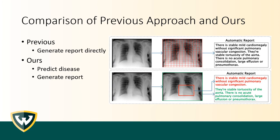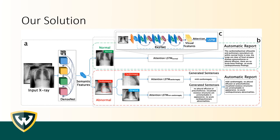Many existing methods use a cross-grid of image regions as the visual features to generate reports directly, while our approach first predicts and localizes the disease as the semantic features, then followed by a report generation. Our workflow first annotates an X-ray image by classifying and localizing the disease, and then generates the corresponding sentence to build up the entire reports with an attentive LSTM.